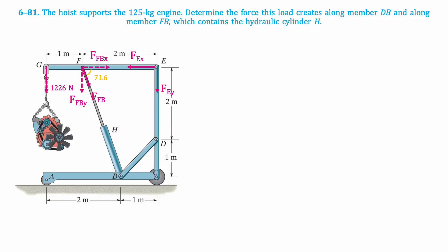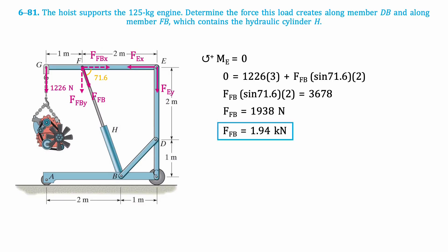Then, we'll take the moment about point E. Since the components of E and the X component of force FB pass through point E, they are not included in this calculation. This is the resulting equation, which when isolated for force FB results in 1.94 kilonewtons.